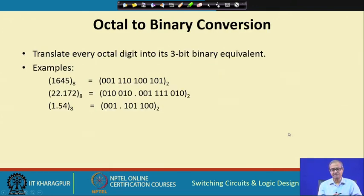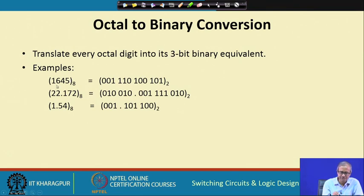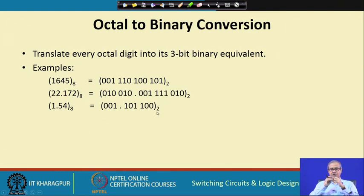Octal to binary is even simpler: take an octal number and replace each octal digit with its 3-bit binary equivalent. For example, 1645 becomes 001 110 100 101. Similarly, a fractional octal number like 22.172 becomes 010 010 . 001 111 010, and so on. Converting between binary and octal is very trivial.